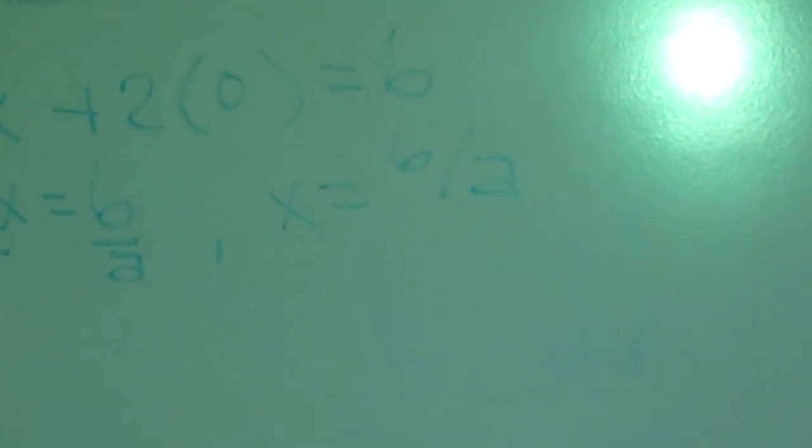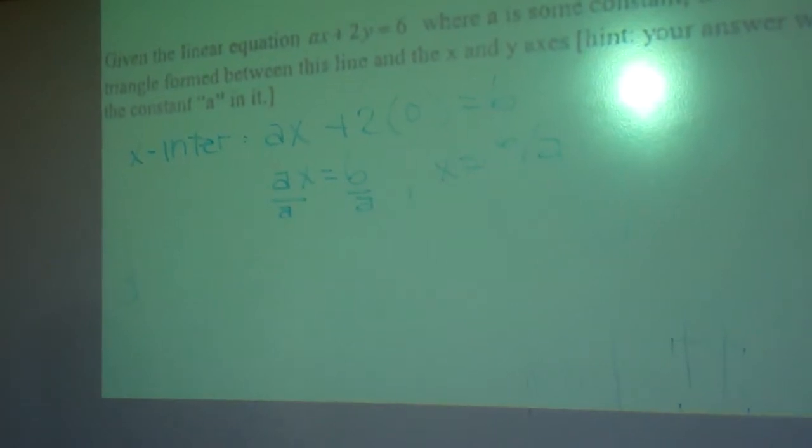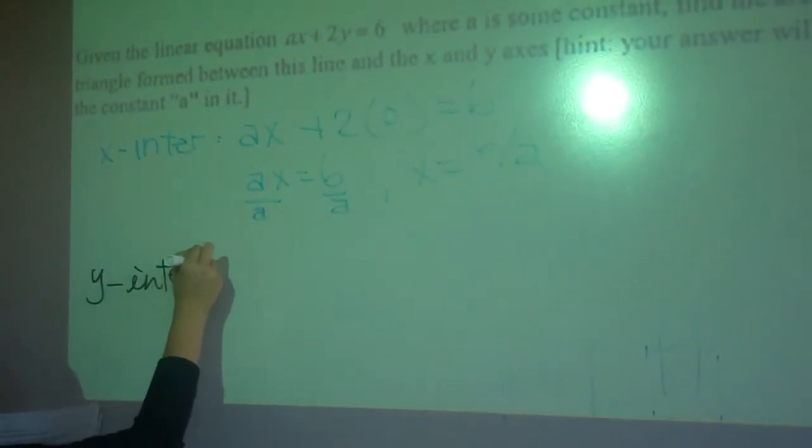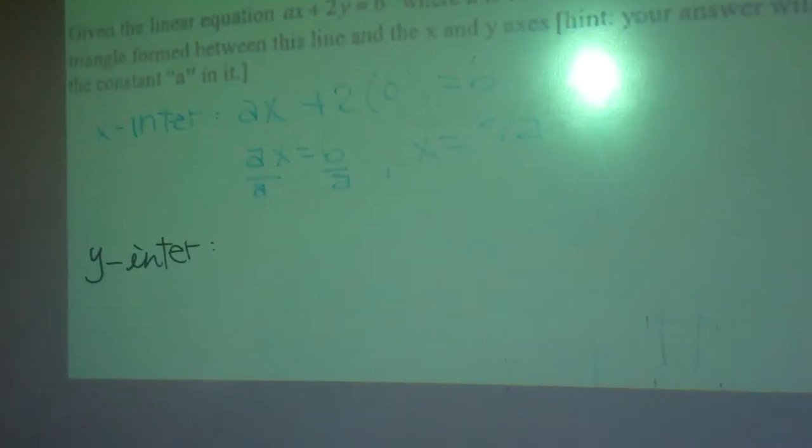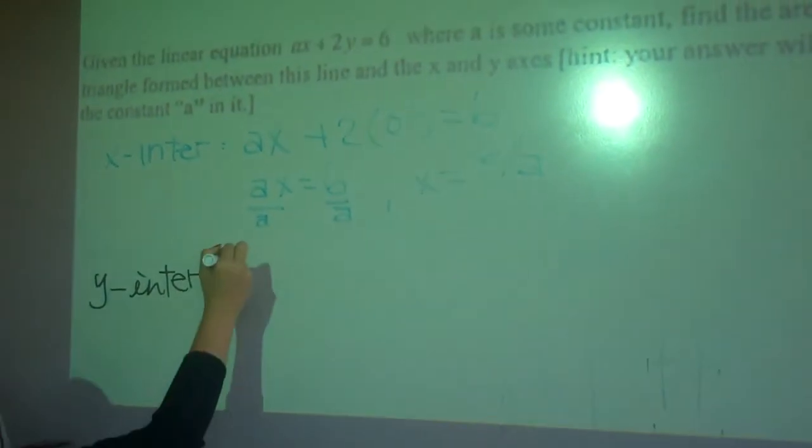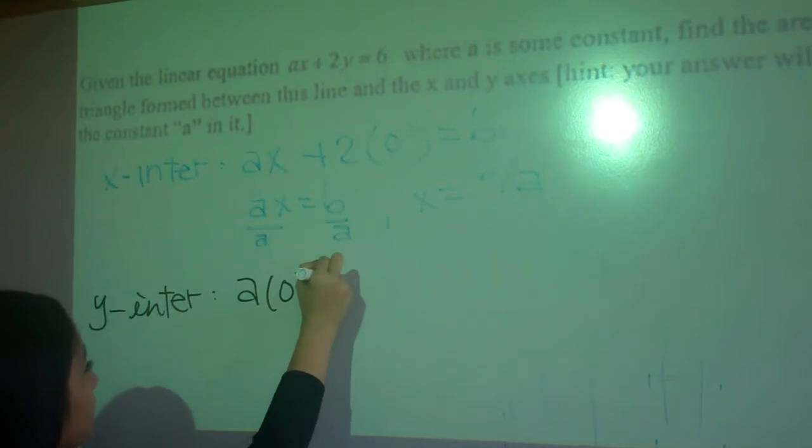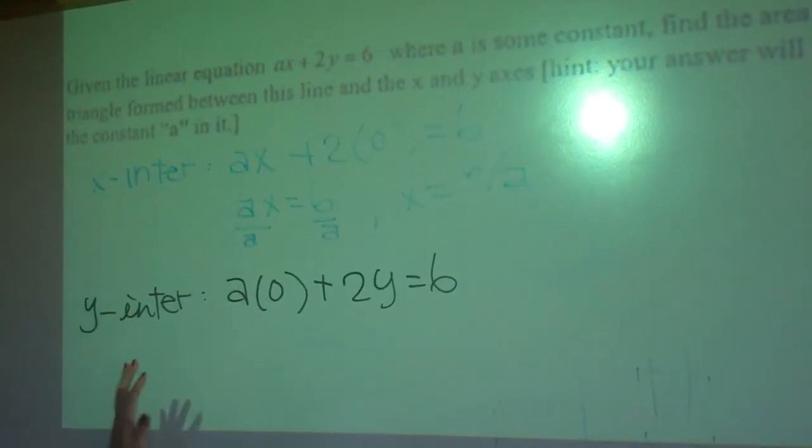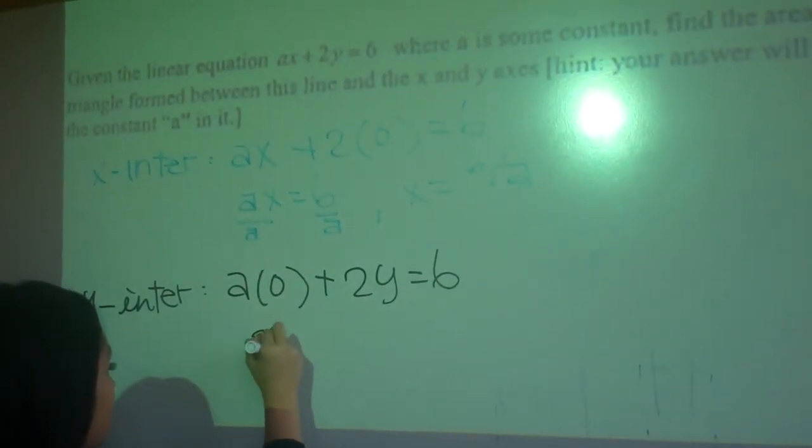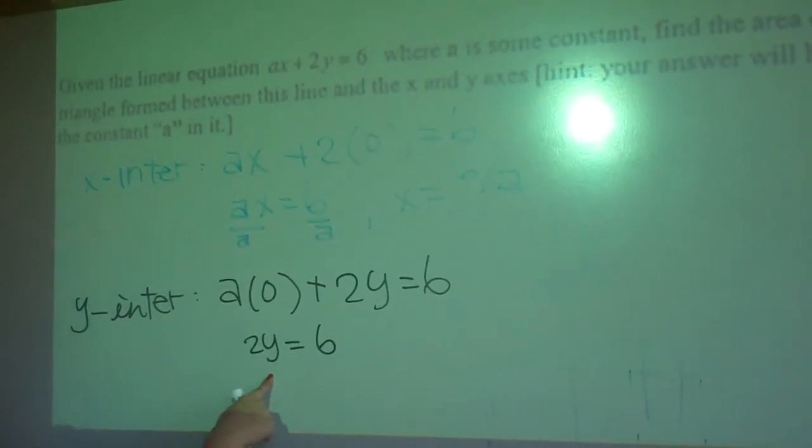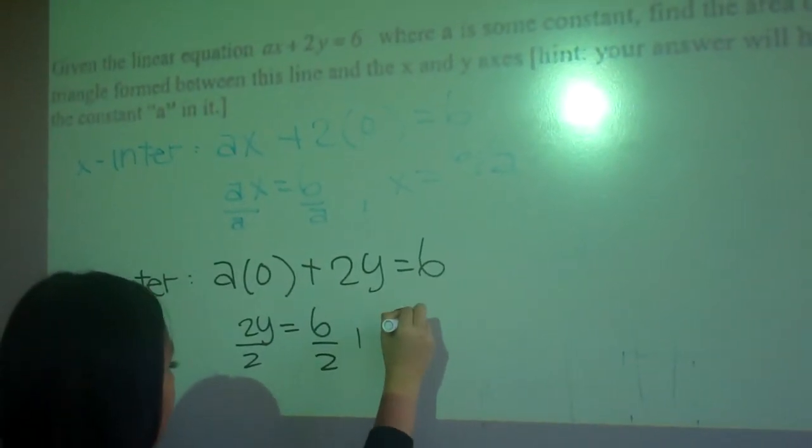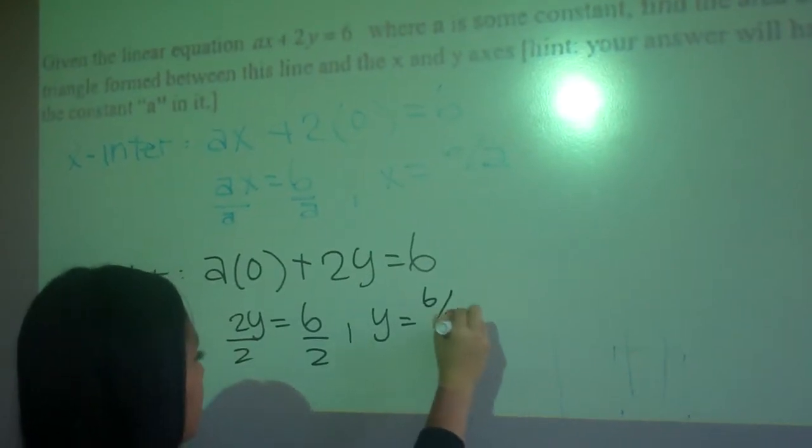And now we have to look for the y-intercept. And then for the y-intercept, we have to set x equals 0. So we get 2y equals 6. So we will have only 2y equals 6. And we want to isolate the y, so we divide by 2. So y equals 6 over 2, which is 3.